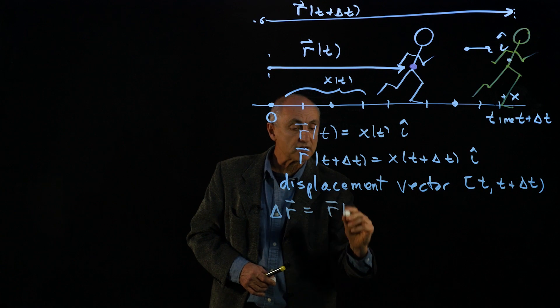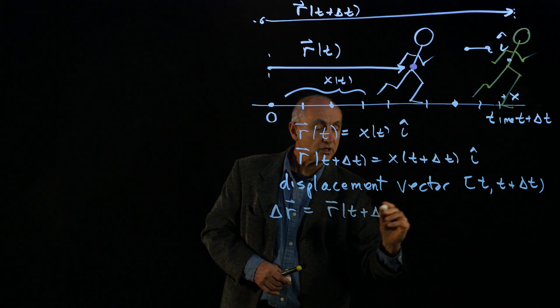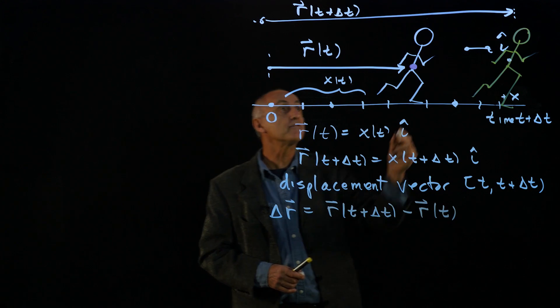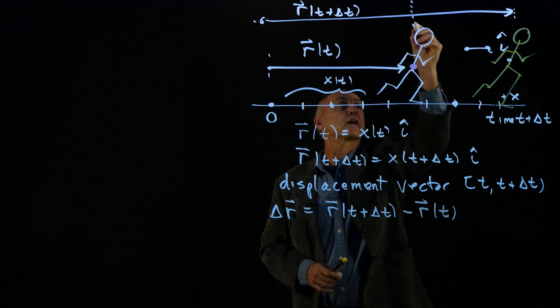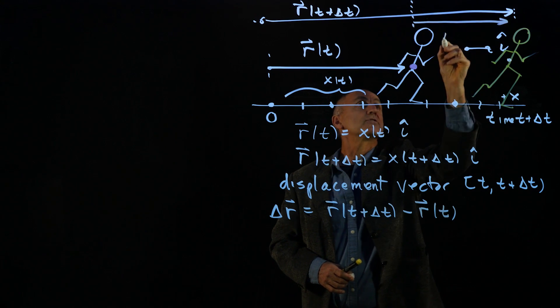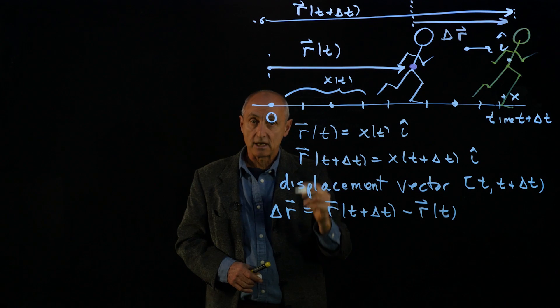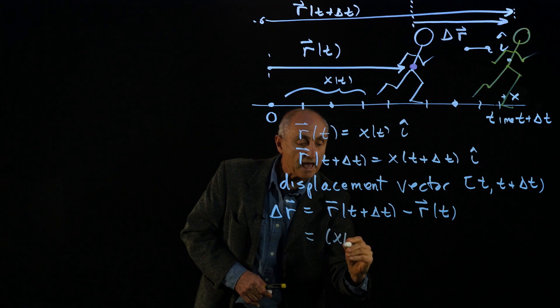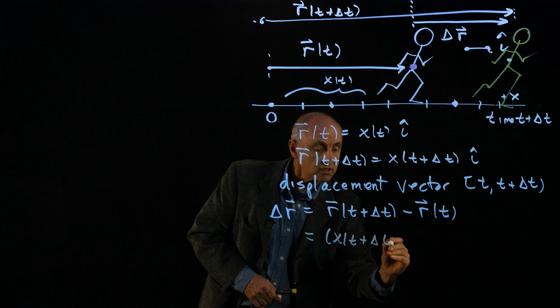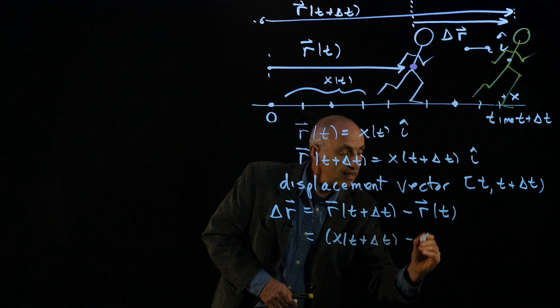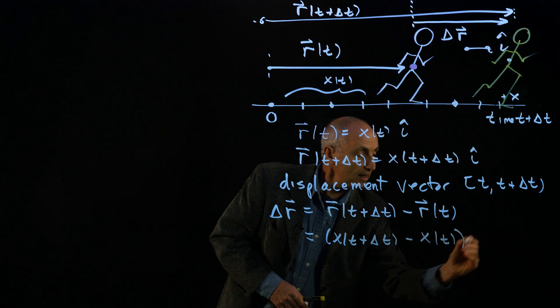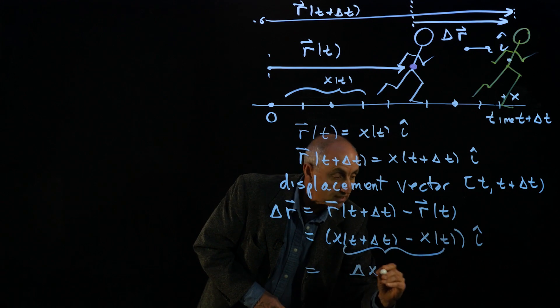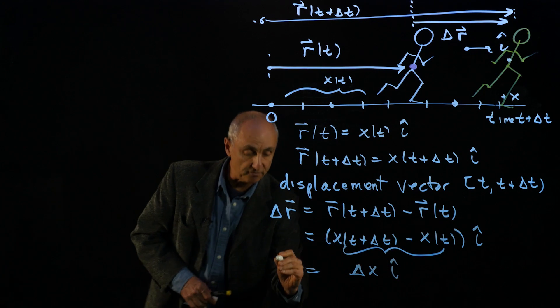And what we mean is the vector r(t + Δt) minus the vector r(t). And if we now use our two definitions here, then this becomes x(t + Δt) minus x(t) î. And this quantity here we refer to as the component of the displacement vector.